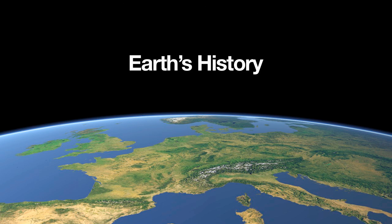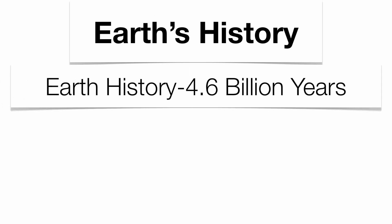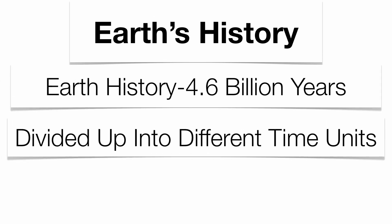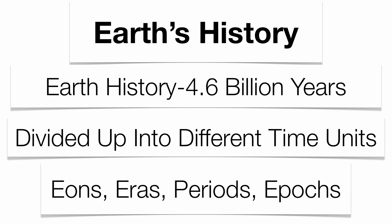With Earth's history, we're dealing with such a huge amount of time — about four and a half billion years. We need to break that time up into smaller units called eons, eras, periods, and epochs. When one of these time units ends and another begins, it's usually based upon an extinction, an appearance, or some sort of geologic event, like the breakup of Pangea.